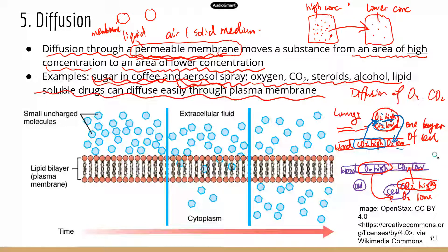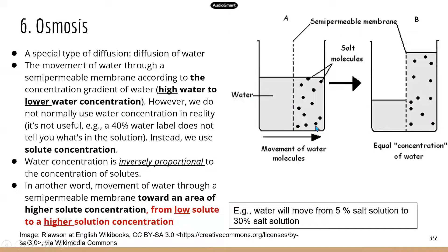That's how gas exchange takes place at the tissues and at the lungs, allowing the body to get rid of carbon dioxide and obtain oxygen for cellular respiration. Your cells perform respiration every second, 24/7, so they constantly require oxygen and need to remove carbon dioxide. Without diffusion there's no way we can perform gas exchange and survive.